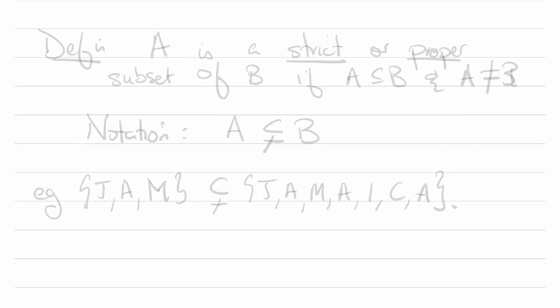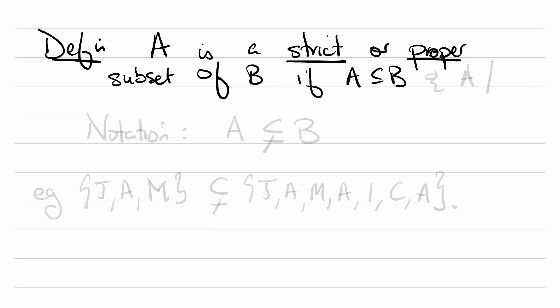Let's get a little bit more precise with this definition. Definition: A is a strict or proper subset of another set B provided A is a subset of B and A is not B. The notation here is similar to before except for the subset notation there's going to be a strike through the horizontal line. Our same example as before is an example of a proper subset.